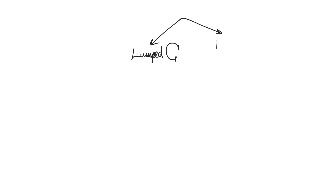The second model is the RC model, in which we assume that the wire has some resistance and thus has to be represented as an RC circuit. Later on we're also going to look at what happens when inductive effects start to have an impact on the wire — what happens if the wire inductance is also significant.